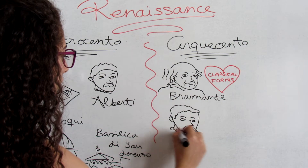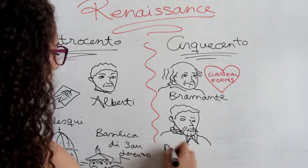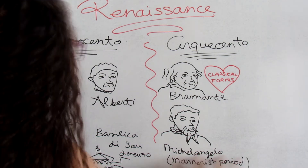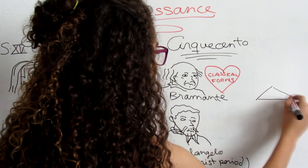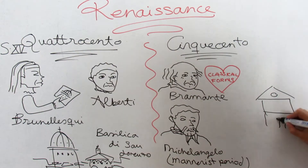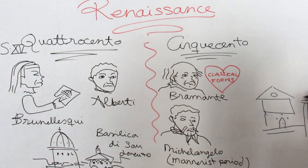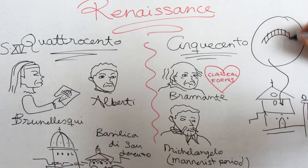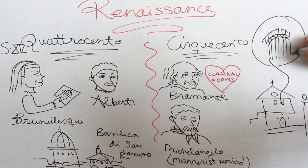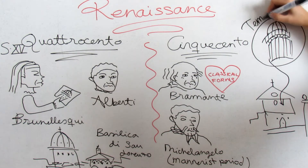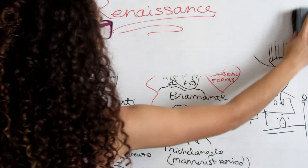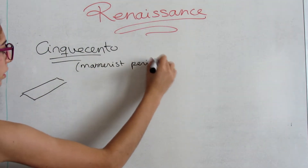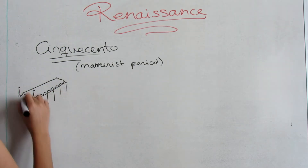During the Mannerist period, architects experimented with using architectural forms to emphasize solid and spatial relationships. The best known architect associated with the Mannerist style was Michelangelo, who is credited with inventing the giant order, a large pilaster that stretches from the bottom to the top of a facade. He used this in his design for the Campidoglio in Rome.